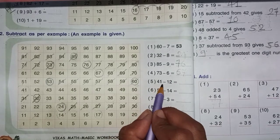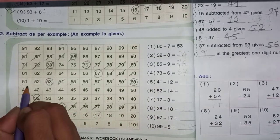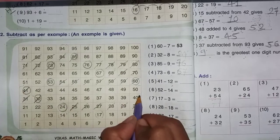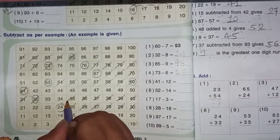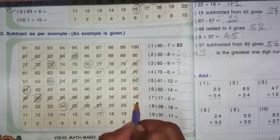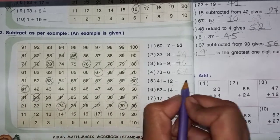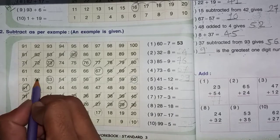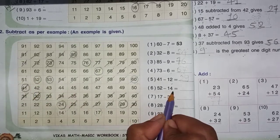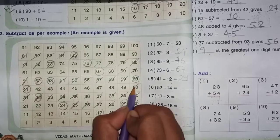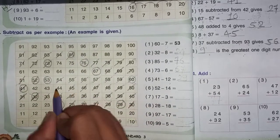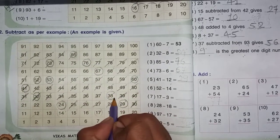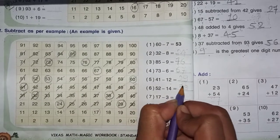Number 5, 41 minus 12. 41 is where? This is it. 12 to subtract. Count 1, 2, 3, 4, 5, 6, 7, 8, 9, 10, 11, 12. The answer is 29.